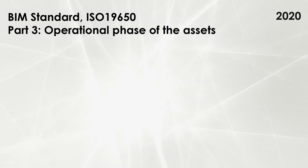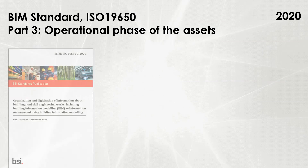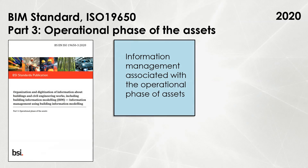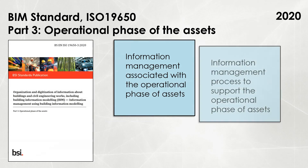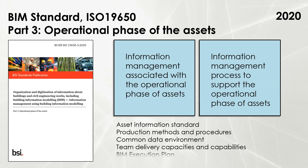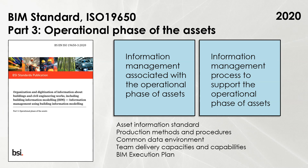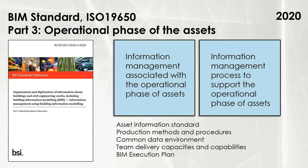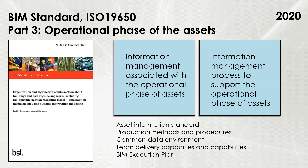BIM standard ISO 19650 Part 3 is focused on the operational phase of the assets. It gives guidelines about asset information standards, production methods and procedures, shared resources, common data environment, team delivery capacities and capabilities, and has detailed sections on the BIM execution plan for the operational phase of the asset.